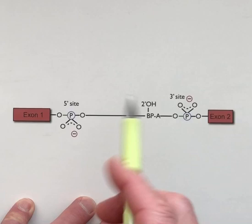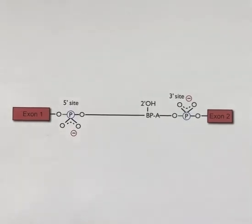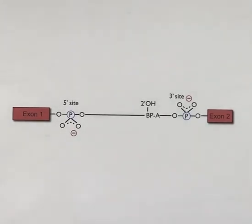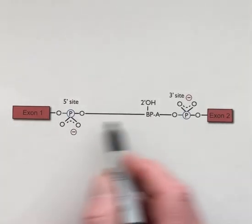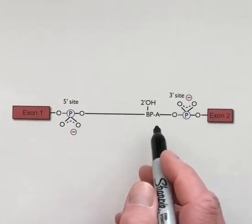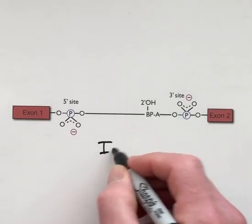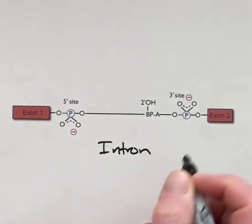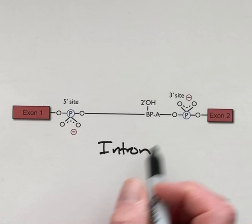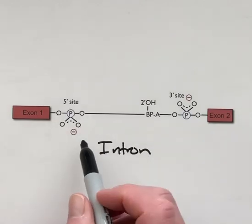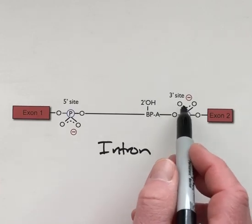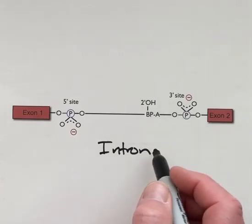The general structure of the intron is shown here and it intervenes, separating these two exons that need to be joined together. All of the names for the sites are in reference to the intron. So we call this the five prime site of the intron and the three prime site of the intron.